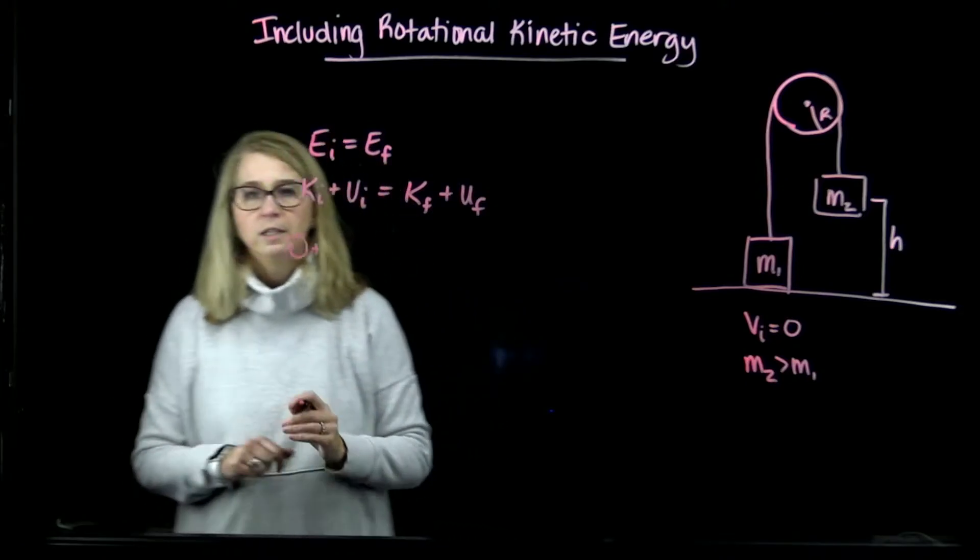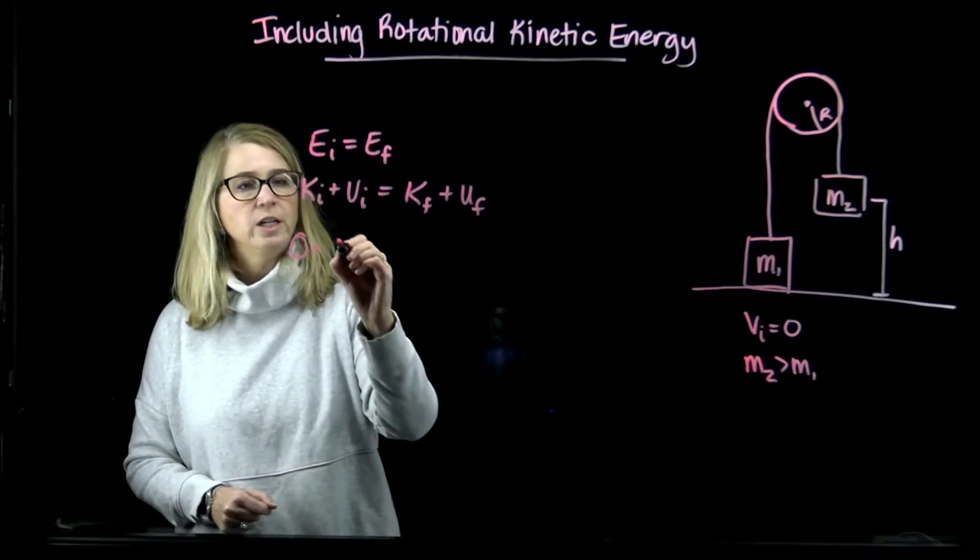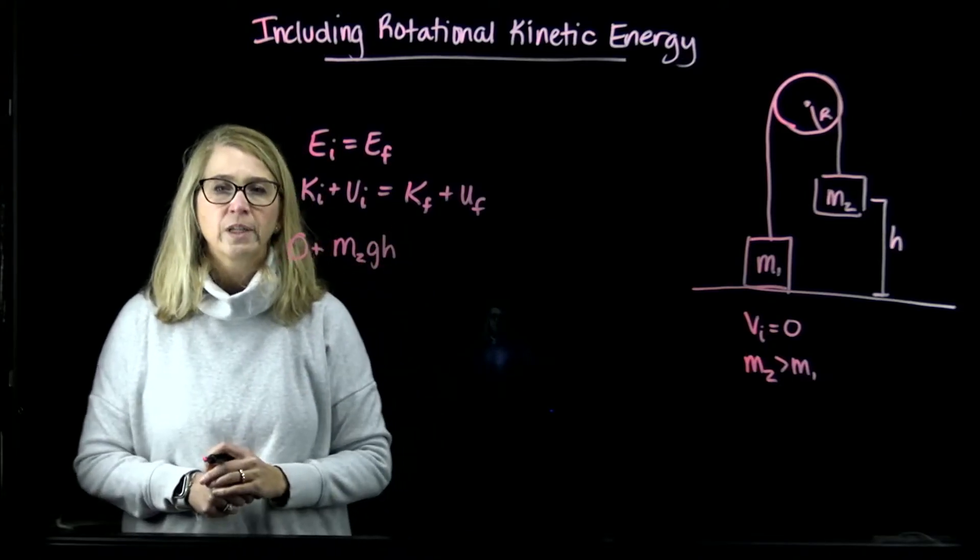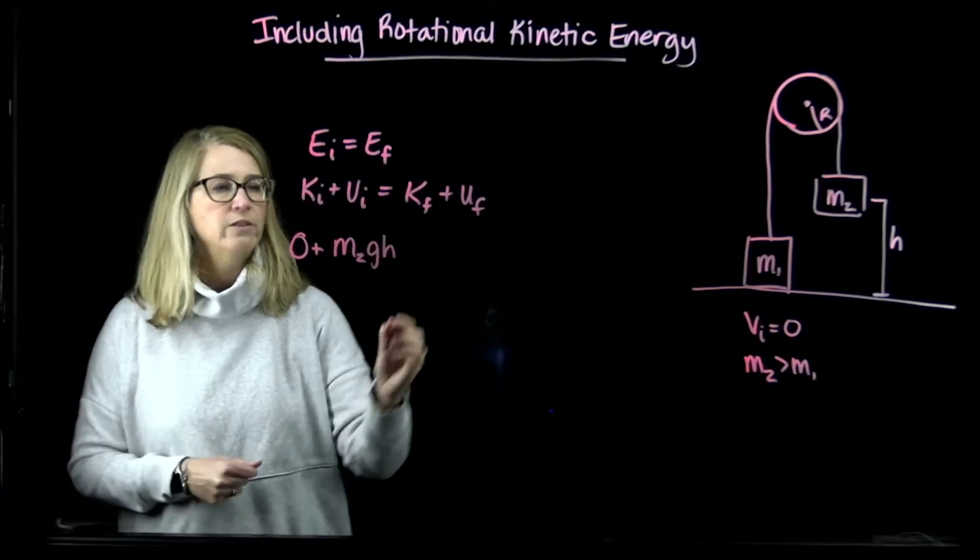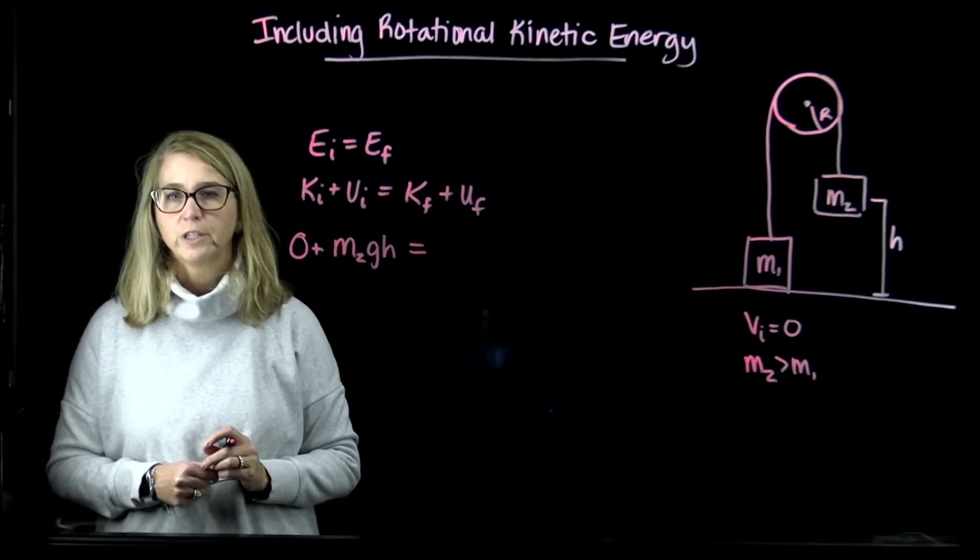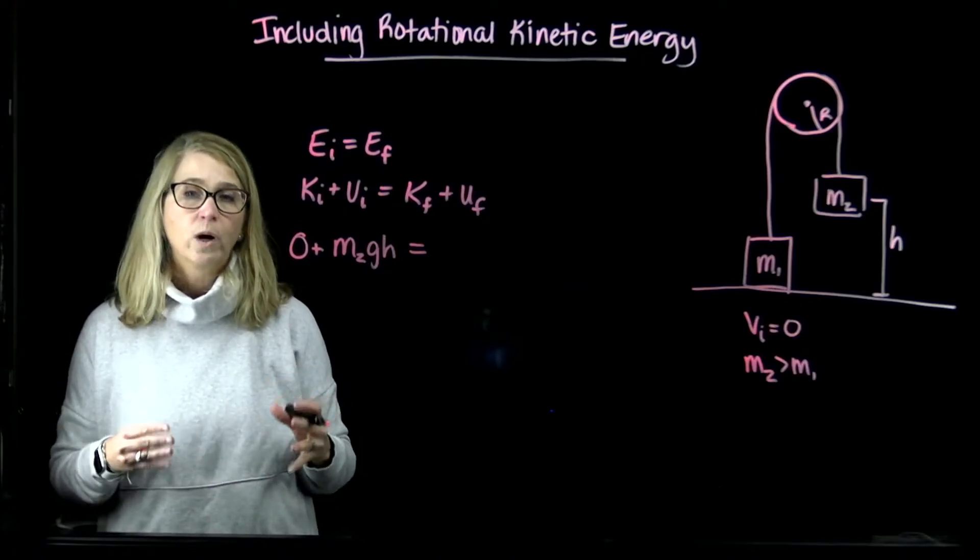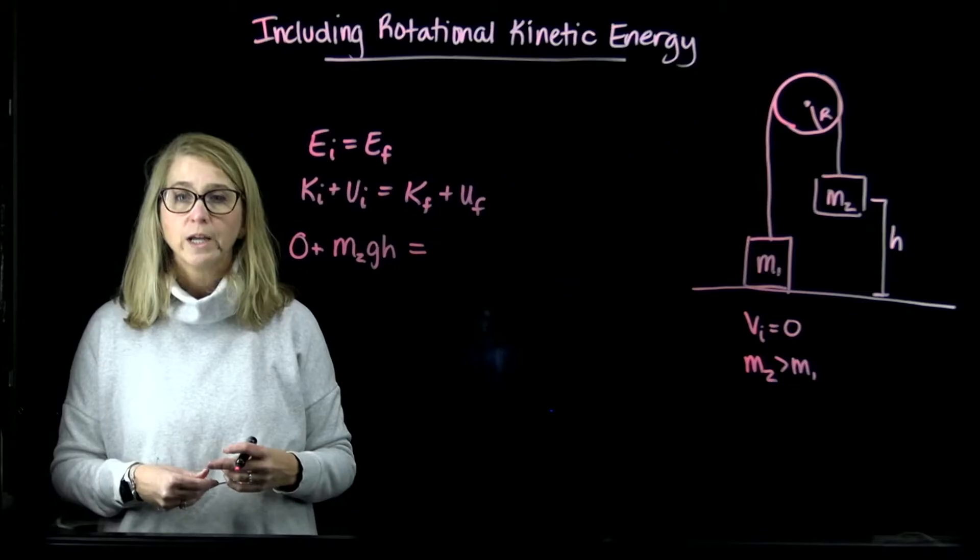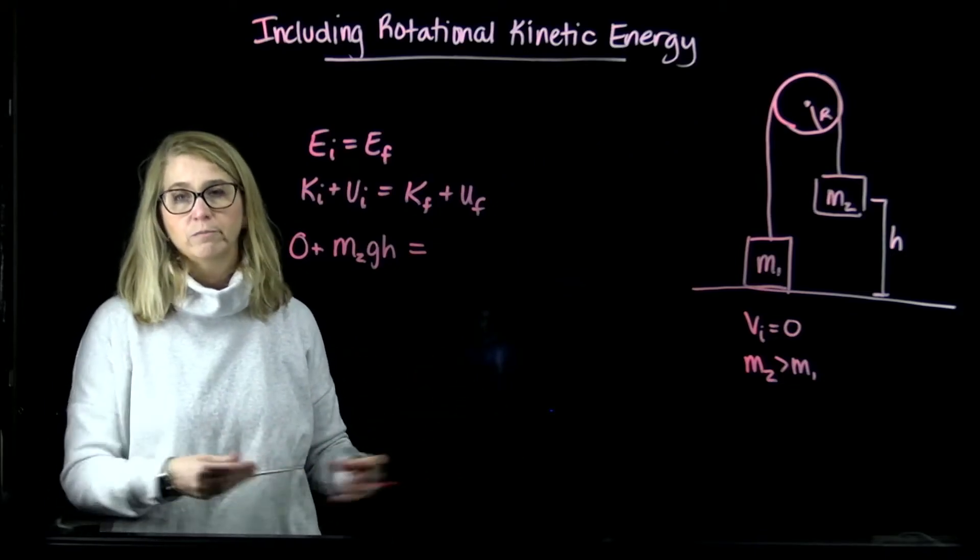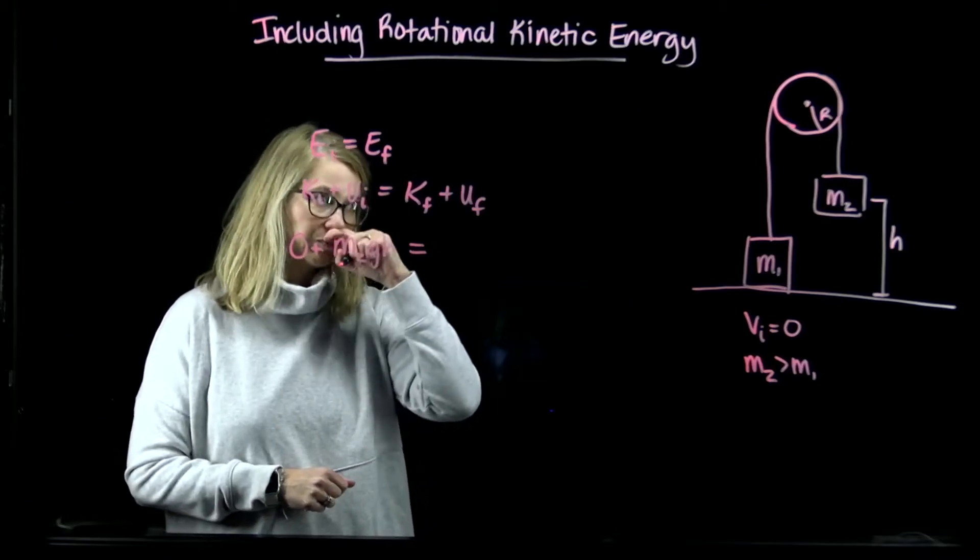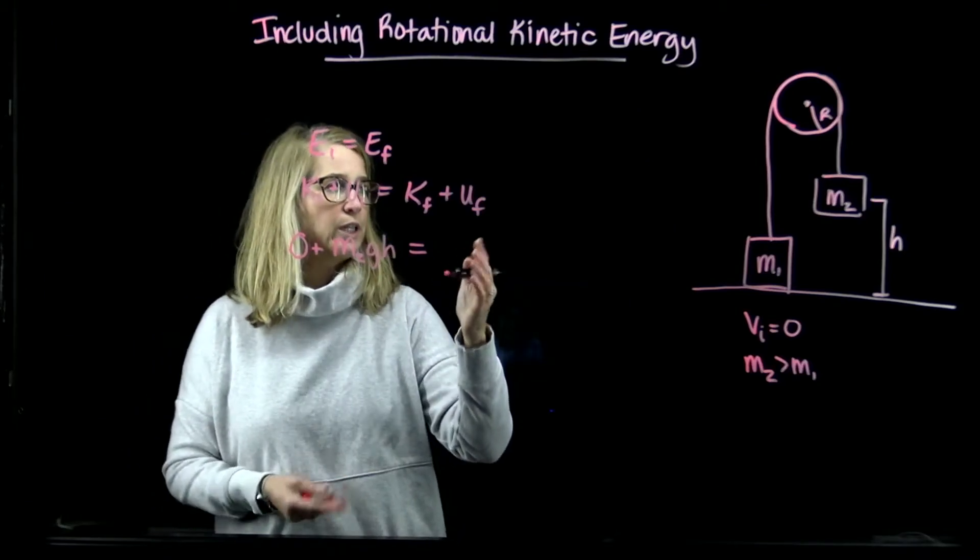The initial velocity of the whole system is zero. That means the pulley isn't rotating either, so the kinetic energy of the system initially is zero. There is a potential energy equal to m2gh, so that's what we have initially. This defines the total quantity of energy that the system has. That quantity of energy is going to remain constant but it can be split up in different ways.